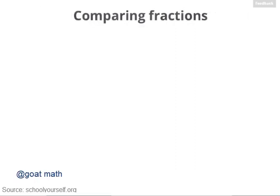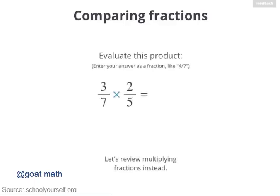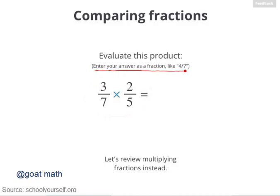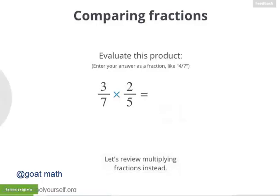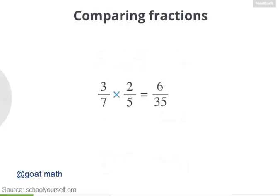Here you'll discover ways to compare fractions, so you can quickly say whether two fractions are equal, or if not, which one is larger or smaller. But first, let's make sure you're all set on multiplying fractions. What's 3 sevenths times 2 fifths? Enter your answer as a single fraction. So 3 sevenths times 2 fifths equals 6 thirty-fifths.